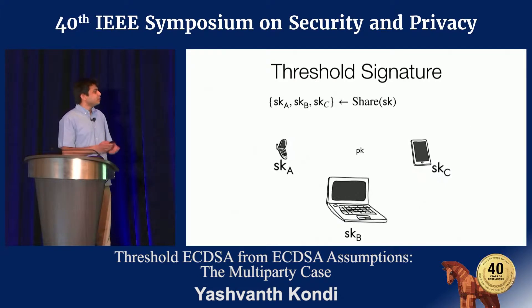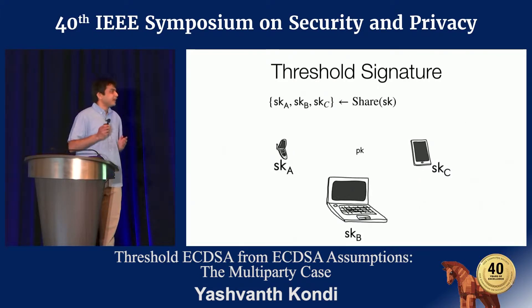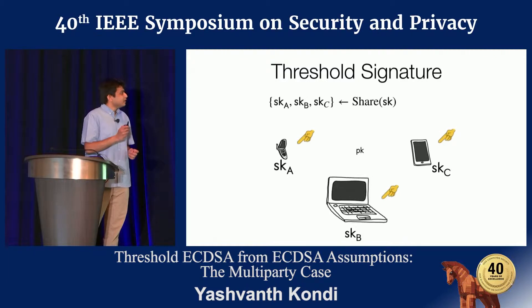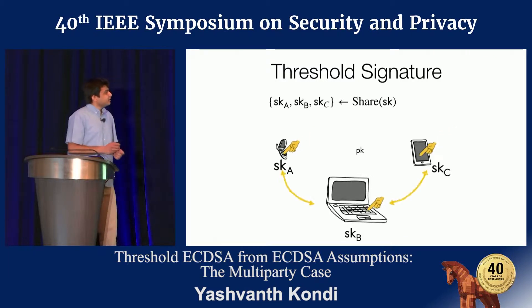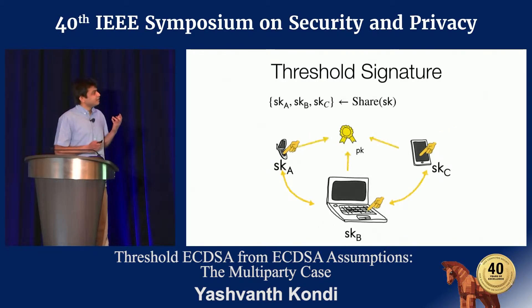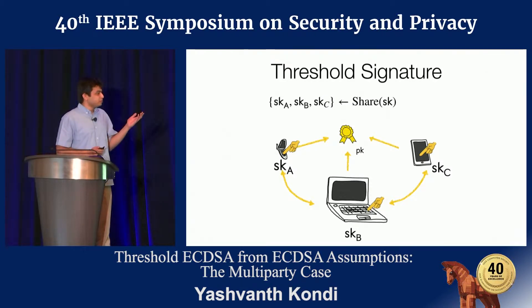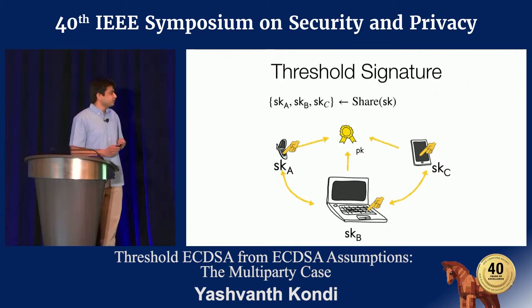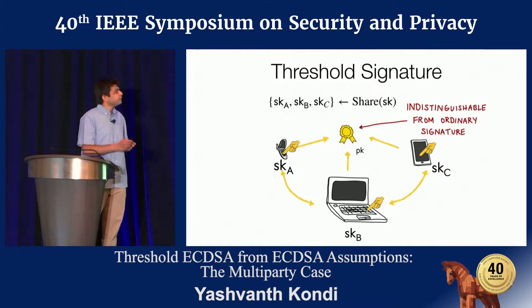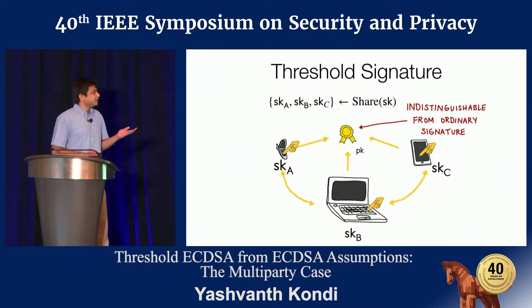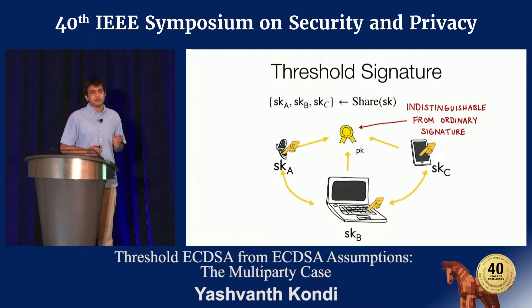You can put these fragments on your different devices, say your phone and your tablet. It needs you to push buttons on all of these and have all of these devices be in agreement in order to produce a signature under the common public key. And it's an important requirement that this signature, coming out of the threshold scheme, looks exactly like the one from the regular way.